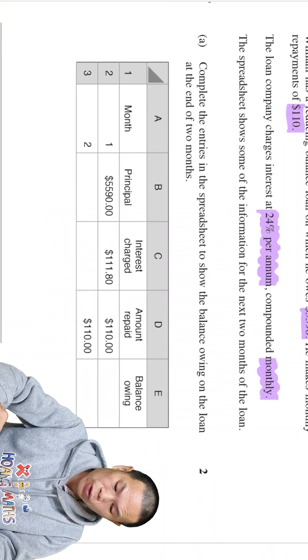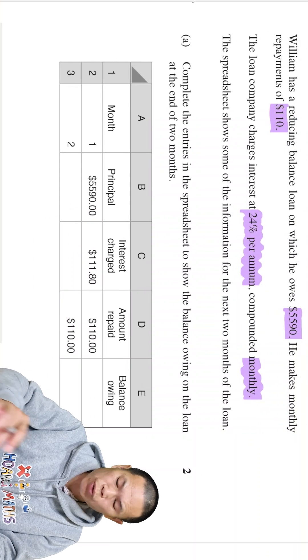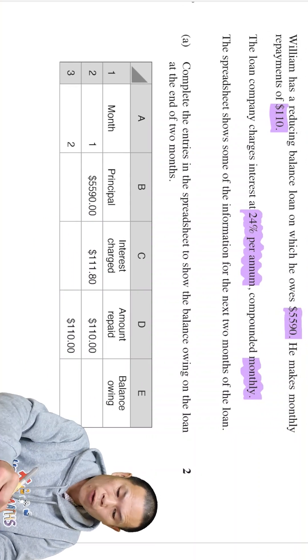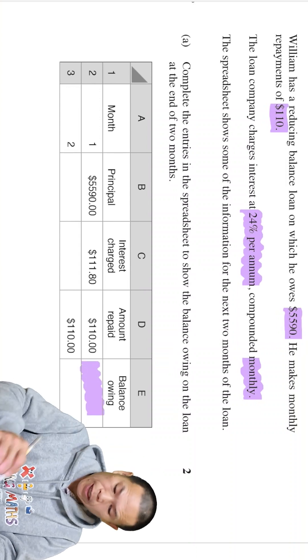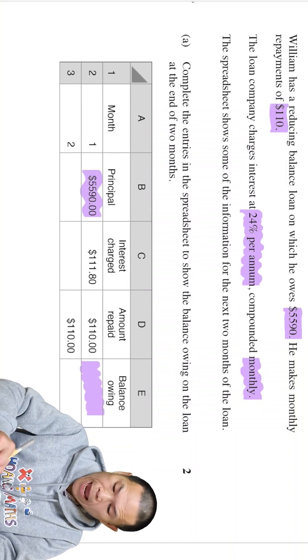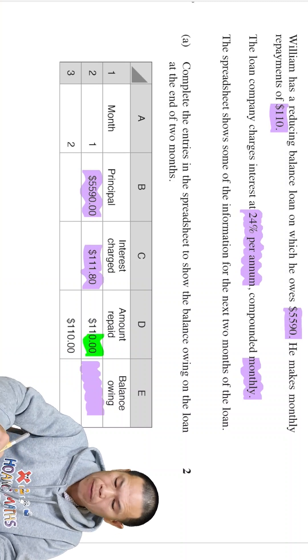So now what we have to do is we need to complete this table here. Spreadsheets if you like. So first of all, the amount that William owed each month is the principal. We add the interest and then we minus the amount of repayment.